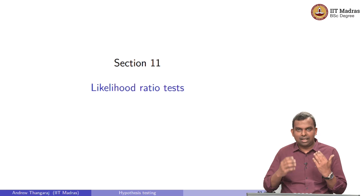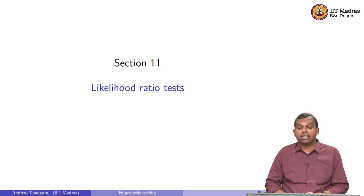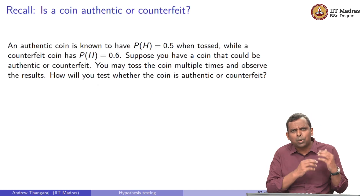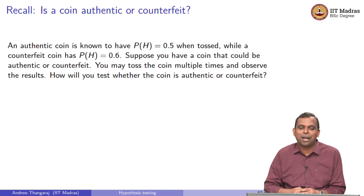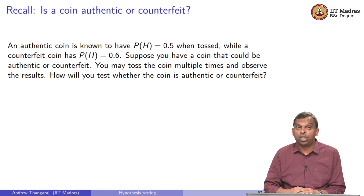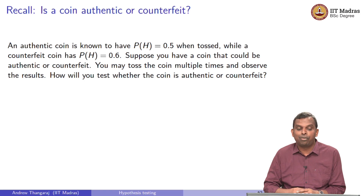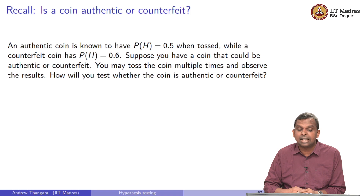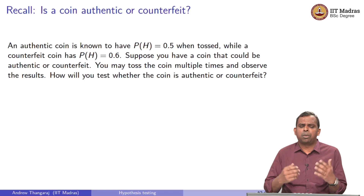Let us see what it is, see the optimality result, and understand it. We will go back to our very old problem that we started hypothesis testing with. There is a coin and you want to test if it is authentic or not. The authentic coin will have probability of heads 0.5 and the fake coin will have probability of heads 0.6. You have to toss it multiple times and find out if it is authentic or not.